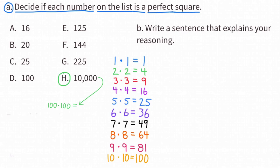B: 20 is not a perfect square because no whole number times itself equals 20. And E: 125 is also not a perfect square because no whole number times itself equals 125.